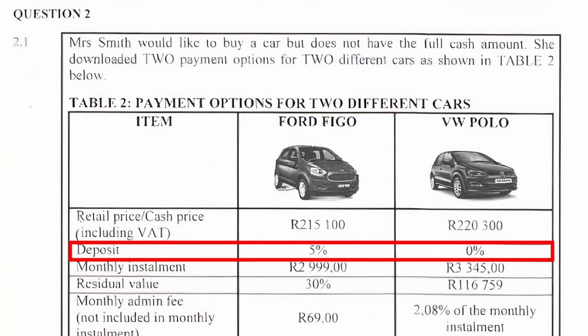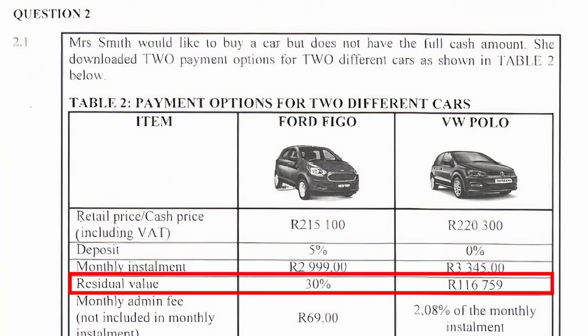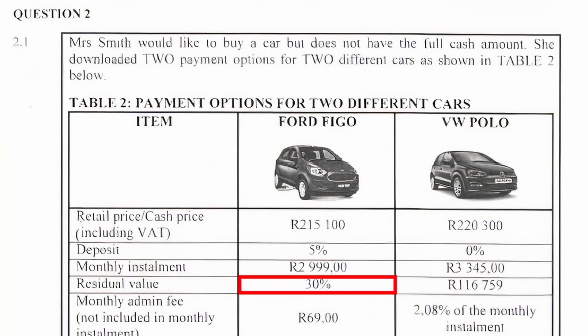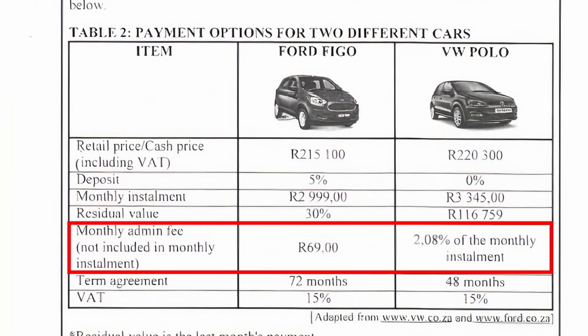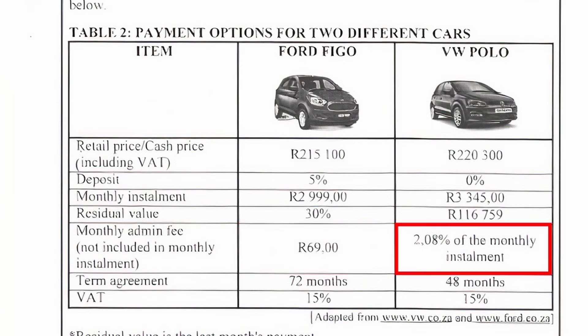The third row lists deposits as percentages. In the fourth row, we are given the monthly installment amounts of both cars. The fifth row lists the residual value — we see that a percentage is given for the Ford Figo and a Rand value for the VW Polo. In the sixth row, we have the monthly admin fee not included in the monthly installment: a Rand value for the Ford Figo and a percentage of the monthly installment for the VW Polo.